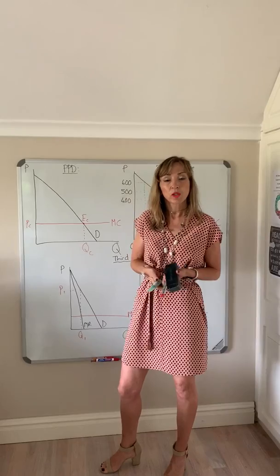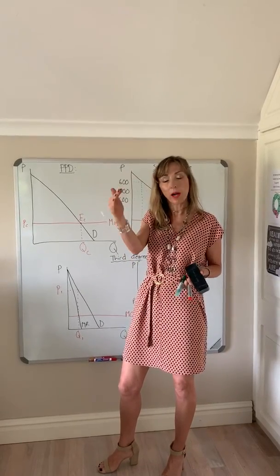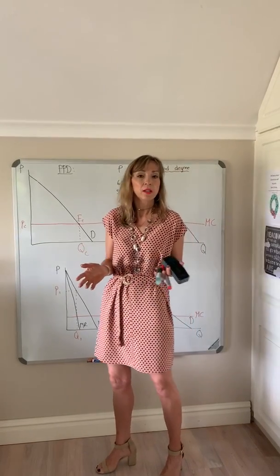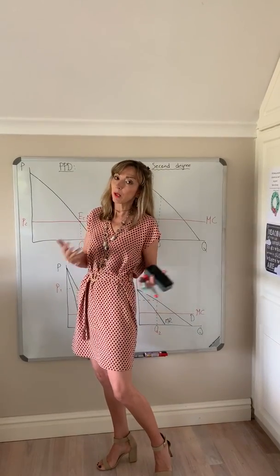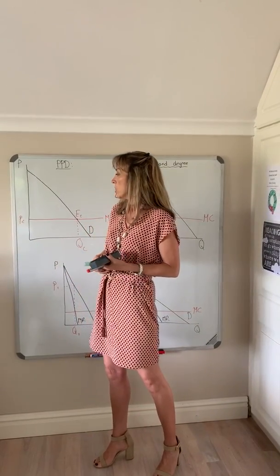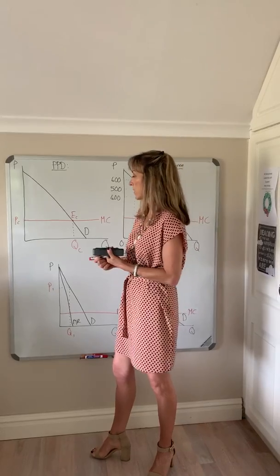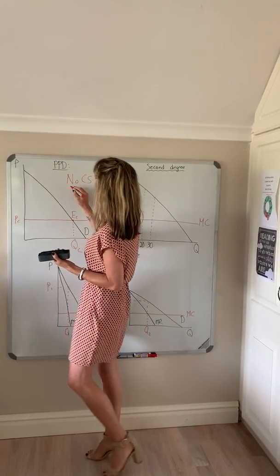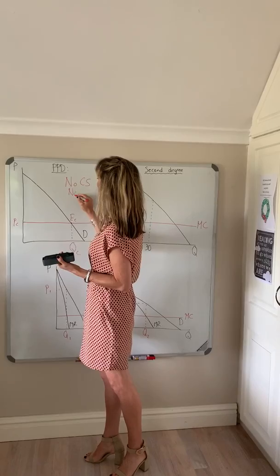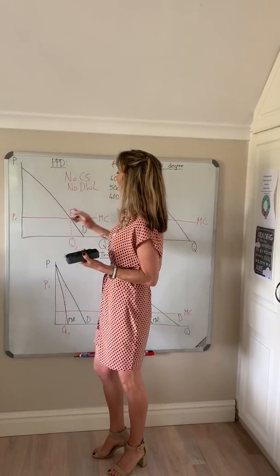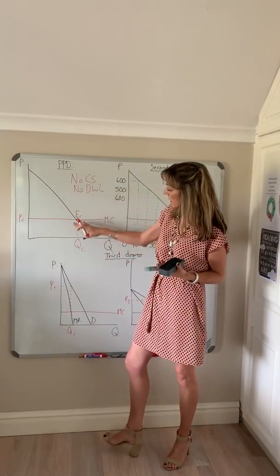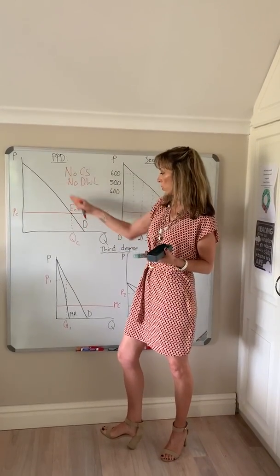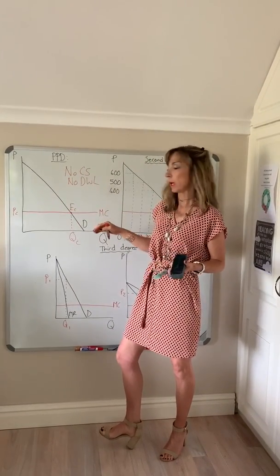So you'll have no consumer surplus — they're charged their maximum willingness to pay, so the difference between what they're willing to pay and what they actually pay is zero. There'll also be no deadweight loss because they end up producing up to the same point as under perfect competition, where demand equals marginal cost.